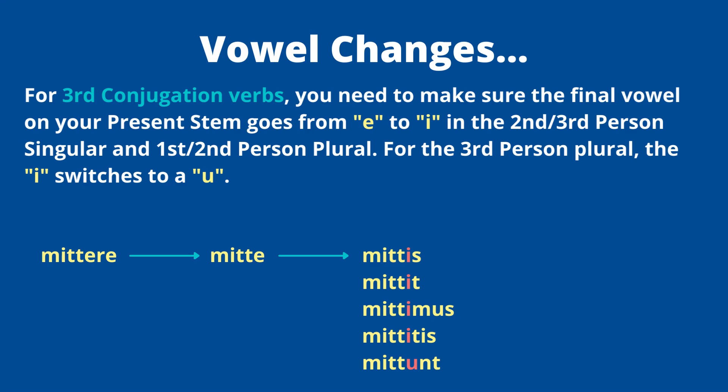For the third person plural ('they'), that 'i' flips again to 'u.' Take 'mitto, mittere' as an example — a third conjugation verb. Dropping '-re' gives the stem 'mitte.' I flip the final 'e' to 'i,' so instead of adding endings to 'e,' I add them to 'i': mittis, mittit, mittimus, mittitis. Then for the third person plural, it flips back to 'u,' giving 'mittunt' — not 'mittint.' That vowel flip is something you really need to pay attention to.